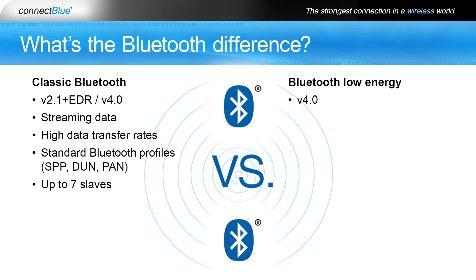In a Bluetooth application where streaming data is used, classic Bluetooth technology is typically the preferred choice as it achieves substantially greater throughput than Bluetooth Low Energy technology. With classic Bluetooth technology, you have the standard Bluetooth profiles that dictate the functionality, and you also have the possibility for up to 7 simultaneous connections.